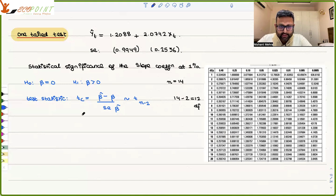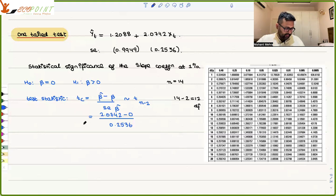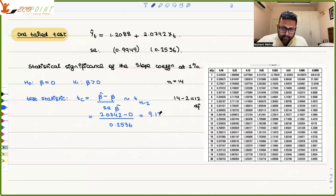Let us calculate the test statistic. Beta hat is 2.0742, minus 0, divided by the standard error of beta hat, which is 0.2536. Once you calculate this, it comes out to be 9.179.